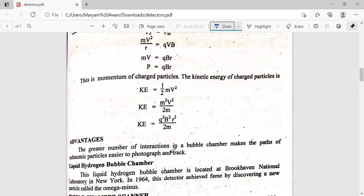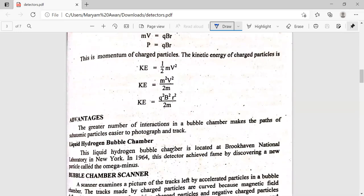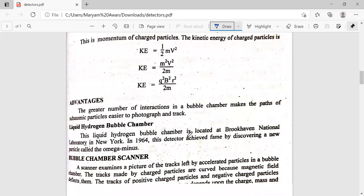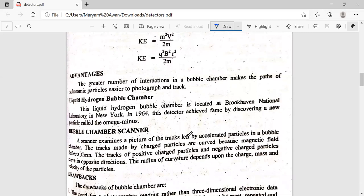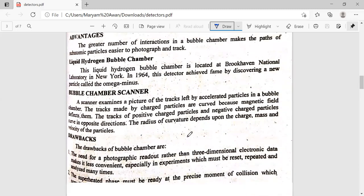The advantage is that the great number of interactions in the bubble chamber makes the path of subatomic particles easier to photograph and track. This liquid hydrogen bubble chamber is located in the Brookhaven National Laboratory in New York. In 1964, this detector was used to discover a new particle called omega minus. This is why it is very famous.